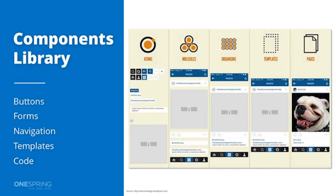The next item is the component library — a collection of reusable assets. A button is just one example, but it's also the collection of different UI controls that go into forms, your navigation, the templates you have, and the code base behind that. This is pulled from Brad Frost, author of the Atomic Design methodology, a very popular approach where things are broken out into atoms, molecules, all the way through pages.